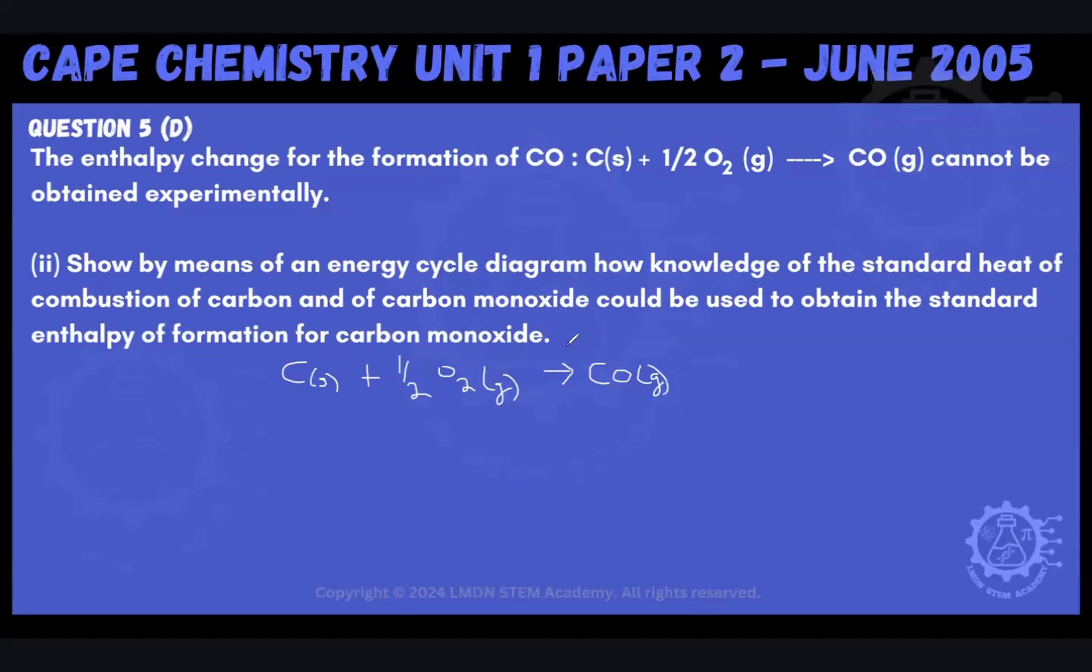And what they're saying is, how can we use knowledge of the standard heat of combustion of carbon? So I'm going to combust the carbon. So then I'll have a delta Hc for carbon solid that's represented by this arrow. And when I do that, provided it's complete combustion, then I'll get carbon dioxide gas as my product. And they're saying also,